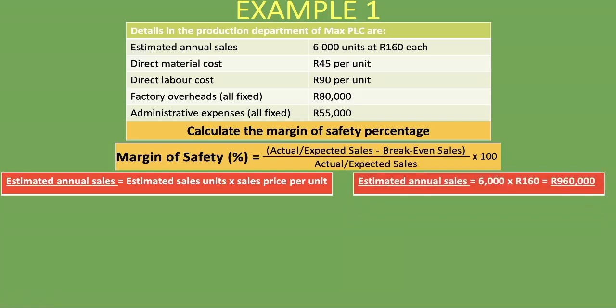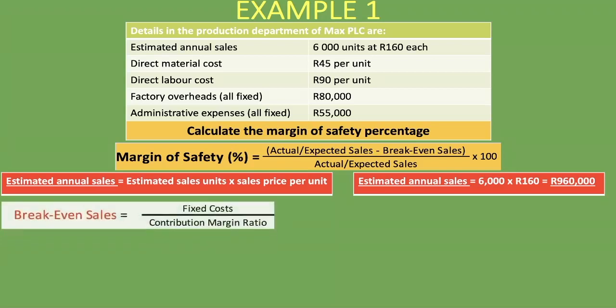Now that we have our expected sales, we have to calculate the break-even sales. Break-even sales are calculated by taking fixed costs divided by the contribution margin ratio. Our fixed costs are 80,000 rand (factory overheads, all fixed) plus 55,000 rand (administrative expenses, also all fixed). To get the contribution margin ratio, we first need the contribution per unit divided by the selling price per unit.